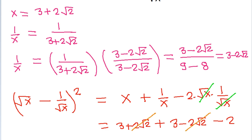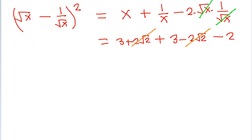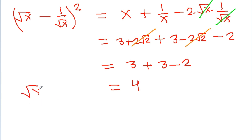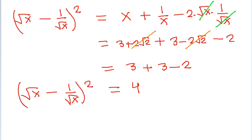The 2 root 2 terms cancel, and we get 3 plus 3 minus 2, which is 6 minus 2, that is 4. So root x minus 1 by root x whole squared is equal to 4, and therefore root x minus 1 by root x is equal to 2.